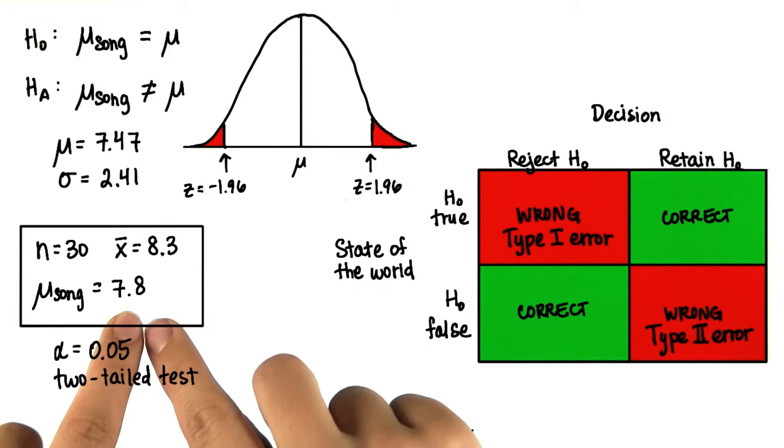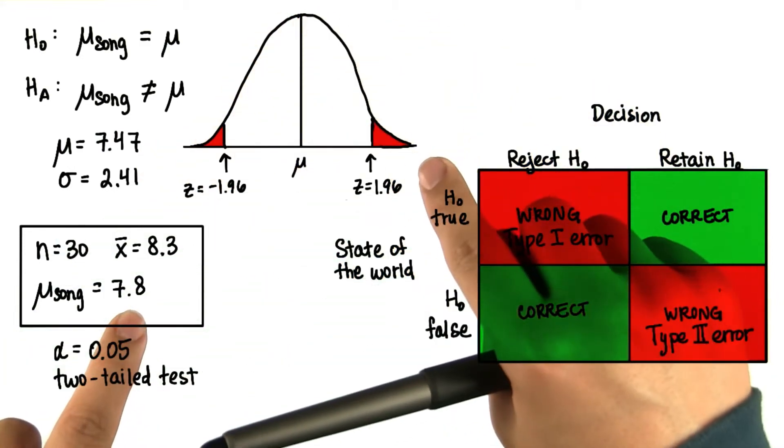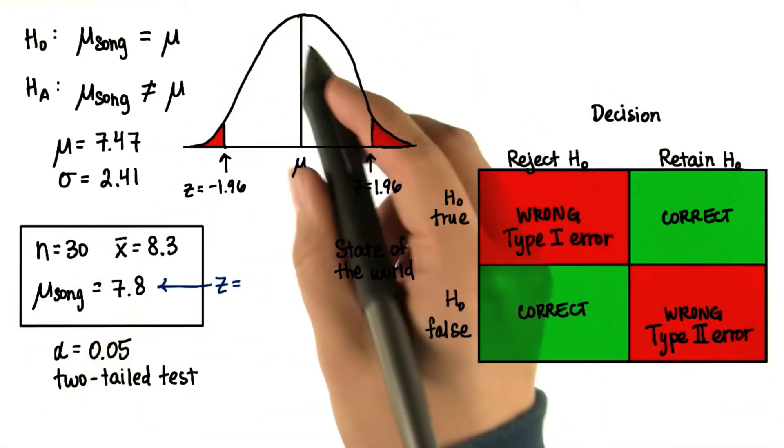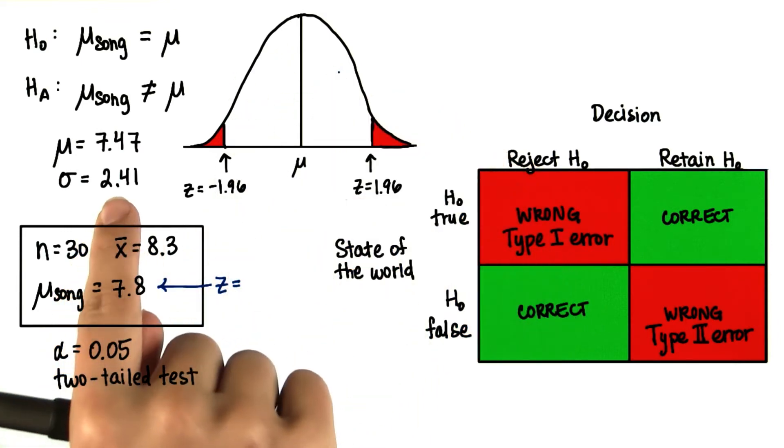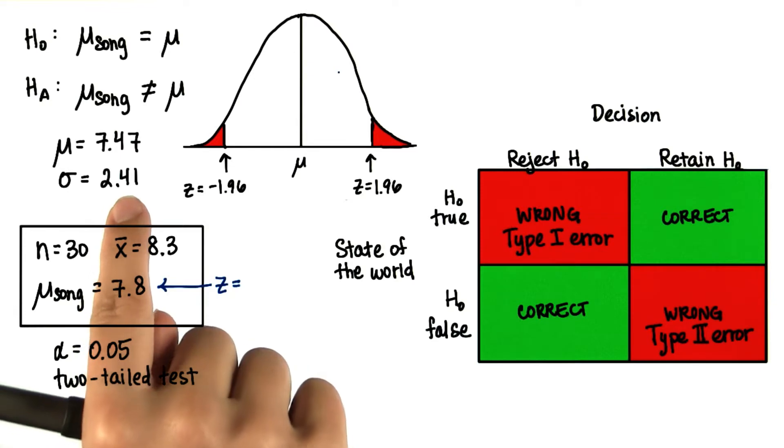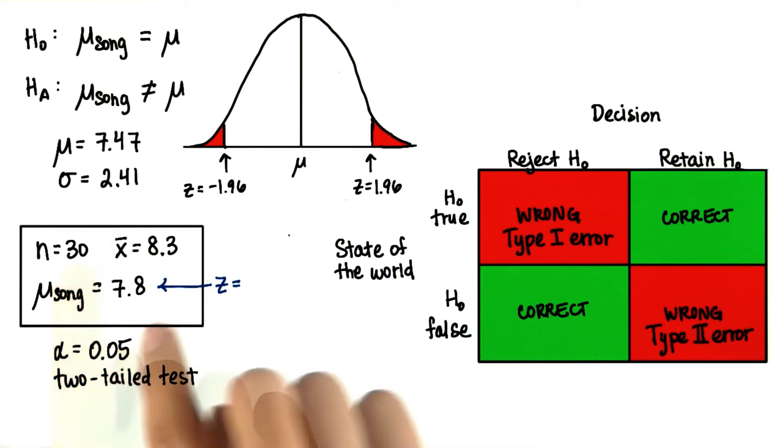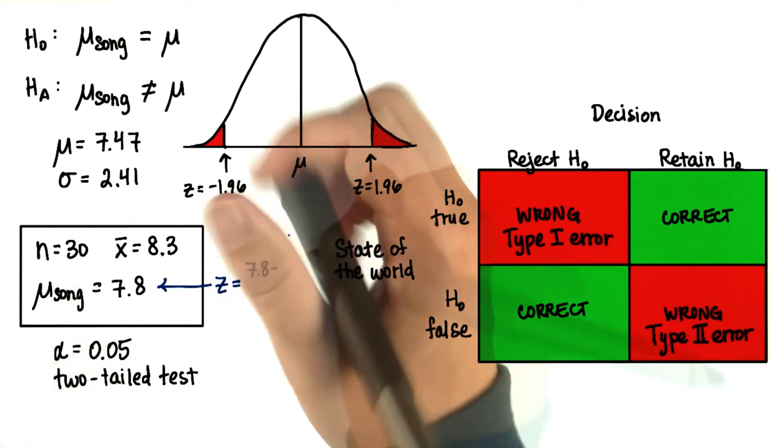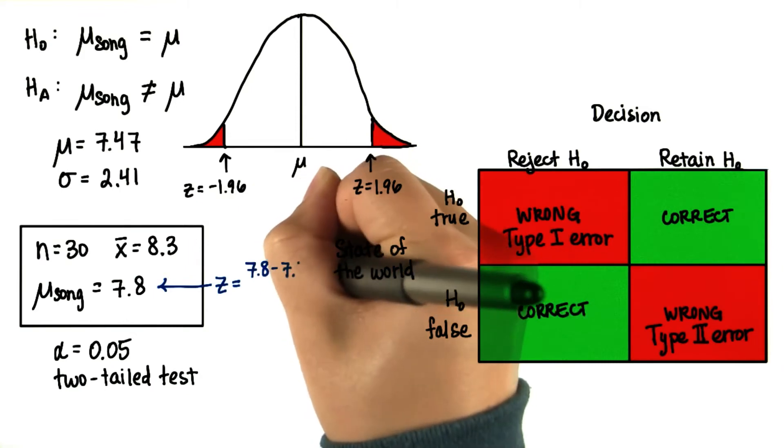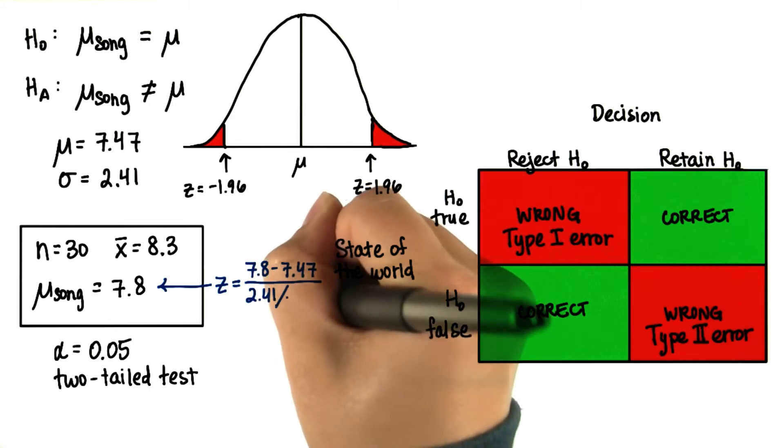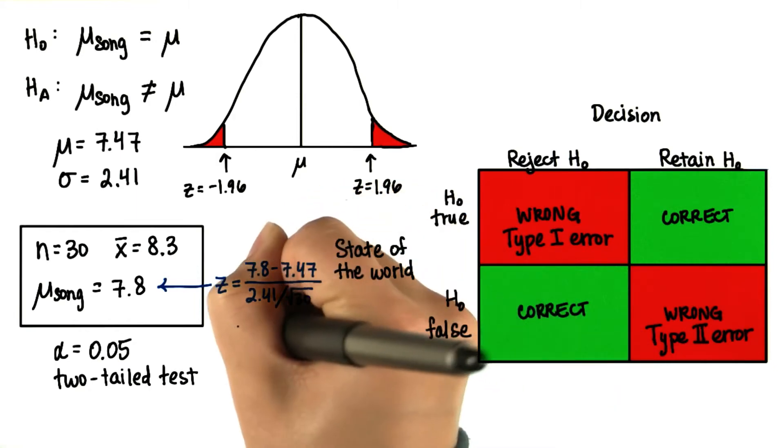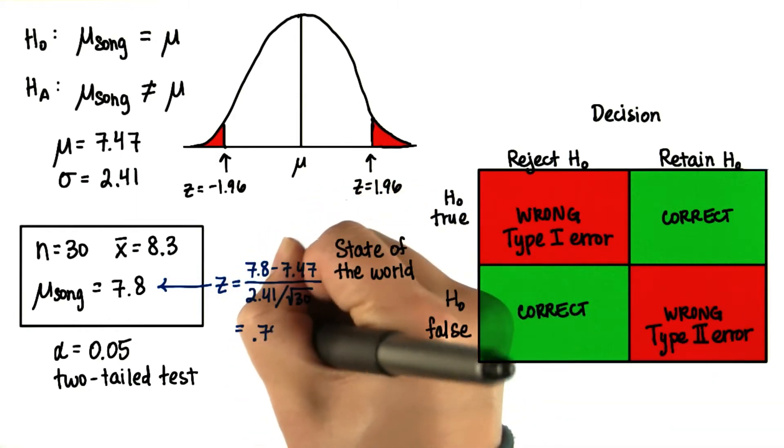Where does the real population mean fall in the distribution of sample means? Remember that the standard deviation of this distribution is the population standard deviation divided by the square root of n. So the z-score of 7.8 is 7.8 minus 7.47 divided by 2.41 divided by the square root of 30. This is about 0.75.